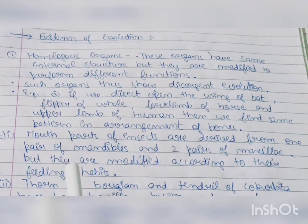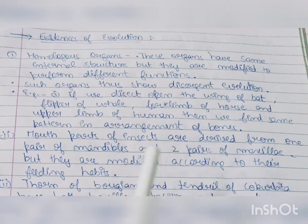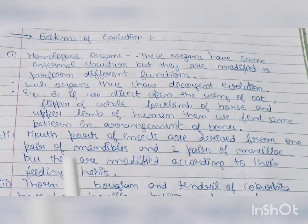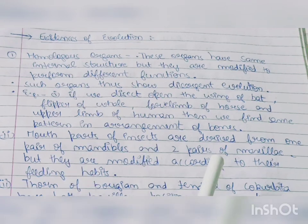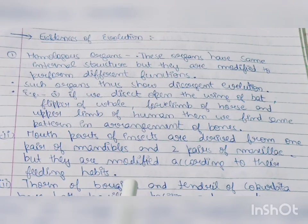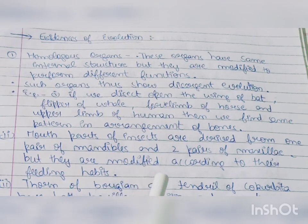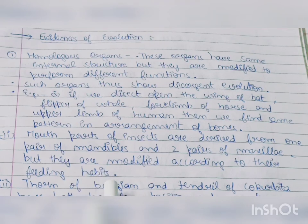A second example: the mouth parts of insects, which are derived from one pair of mandibles and two pairs of maxillae, but they are modified according to their feeding habits.